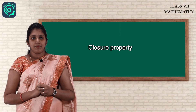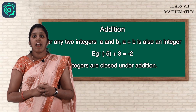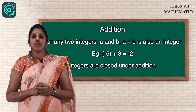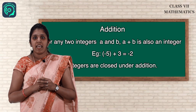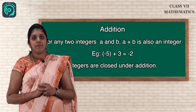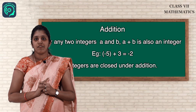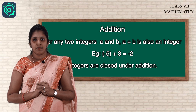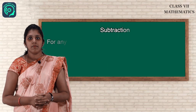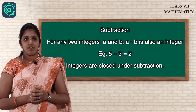First, coming to closure property. The definition is: if A and B are integers, then A plus B is also an integer. So if A and B are two integers and when we add them, A plus B will also be an integer. Example: negative 5 and positive 3 — since the signs are different we subtract, giving negative 2, which is also an integer. So we can say integers are closed under addition.